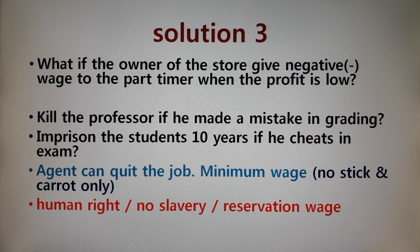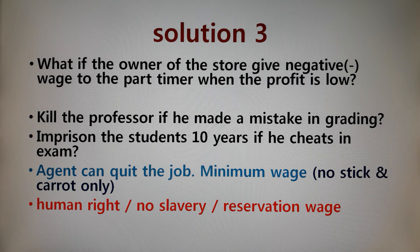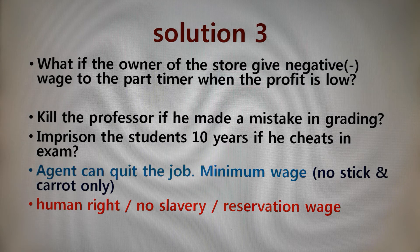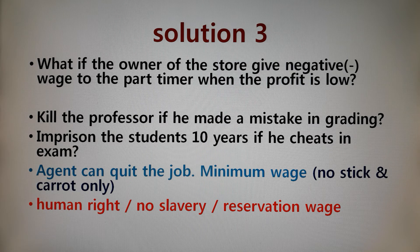Any objections on that? But the problem is, because of democracy and human rights — no slavery — we cannot do that. I cannot get a negative scholarship from my TA. The 7-11 store owner cannot take money back from the part-time worker. The president of Yonsei University cannot kill me. We cannot put a student in prison for 10 years for cheating. It's all democracy and human rights.